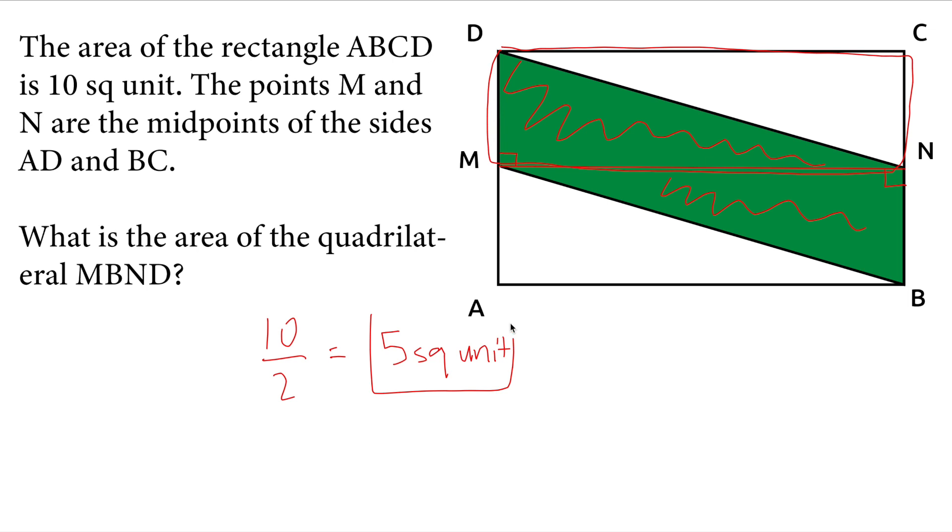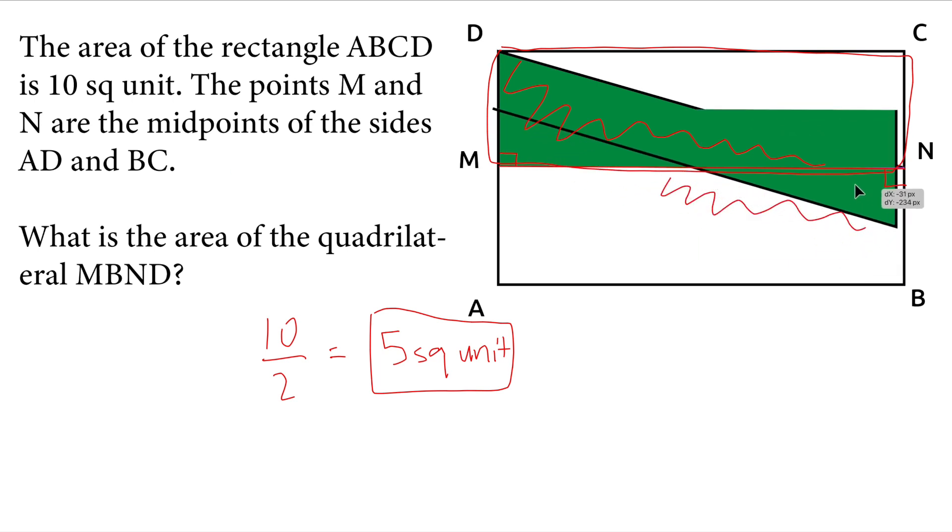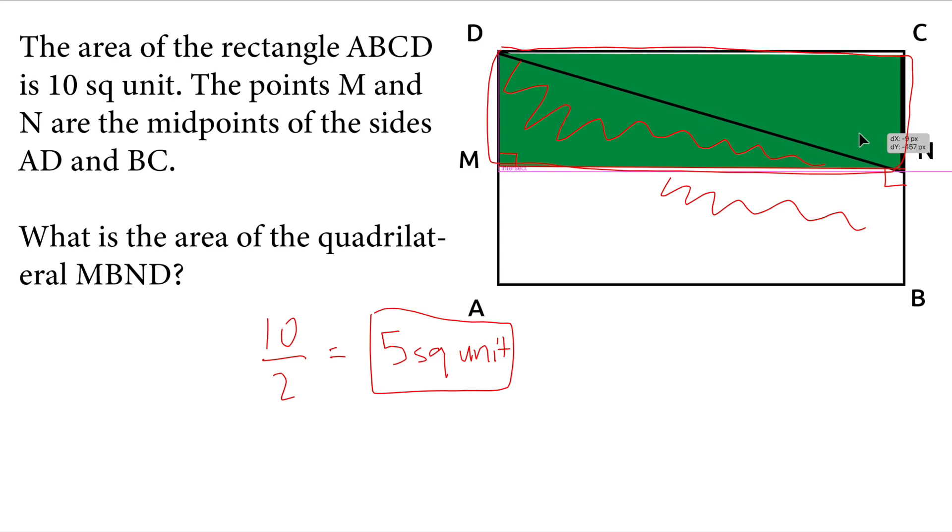And I can also prove this visually. What I'm going to do is move this green triangle all the way to the top of the other green triangle, and then we will see that it will be a rectangle, and that rectangle is half of the big rectangle.